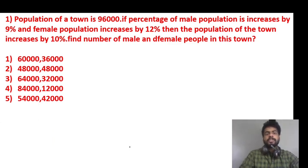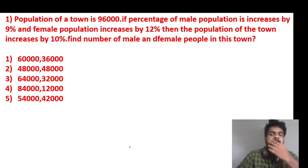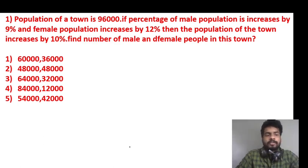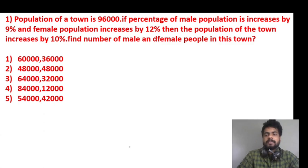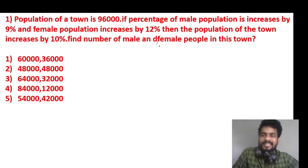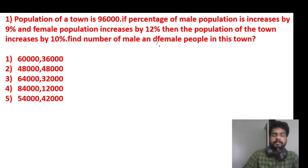The population of a town is 96,000. If the percentage of male population increases by 9% and female population increases by 12%, then the population of the town increases by 10%. Find the male and female population in this town.